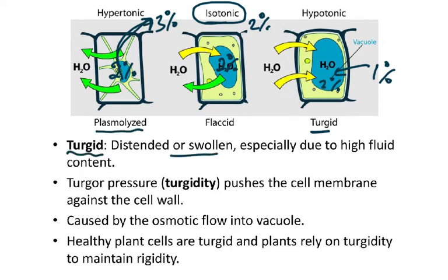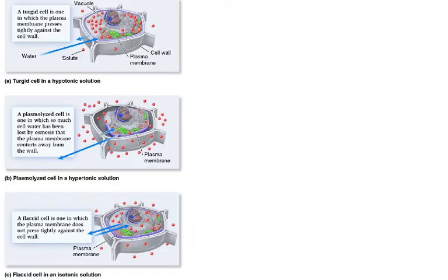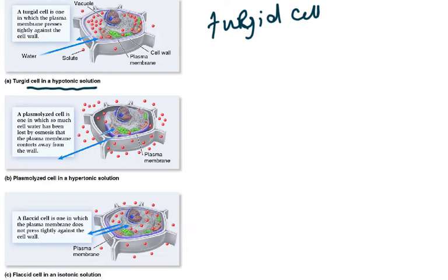Turgid means distended or swollen, especially due to high fluid content. Turgor pressure pushes the cell membrane against the cell wall, caused by the osmotic flow into the vacuole. Healthy plant cells are turgid, and plants rely on turgidity to maintain rigidity — turgidity and rigidity are two different words. A turgid cell is one in which the plasma membrane presses tightly against the cell wall, and it is in a hypotonic solution.